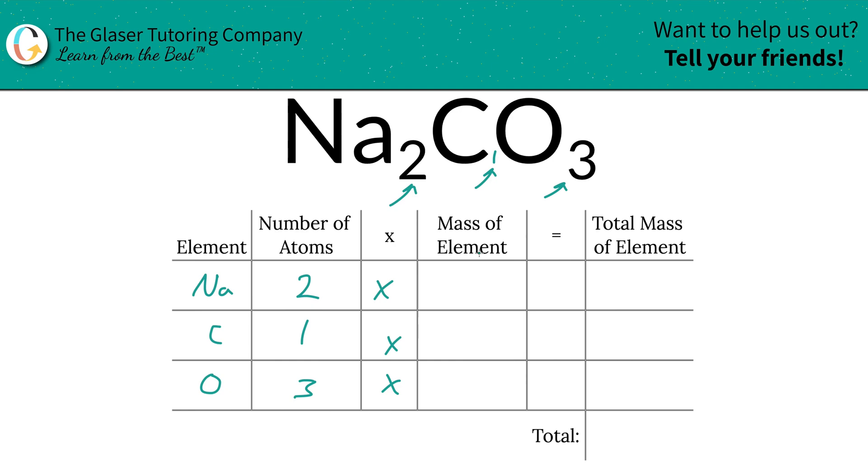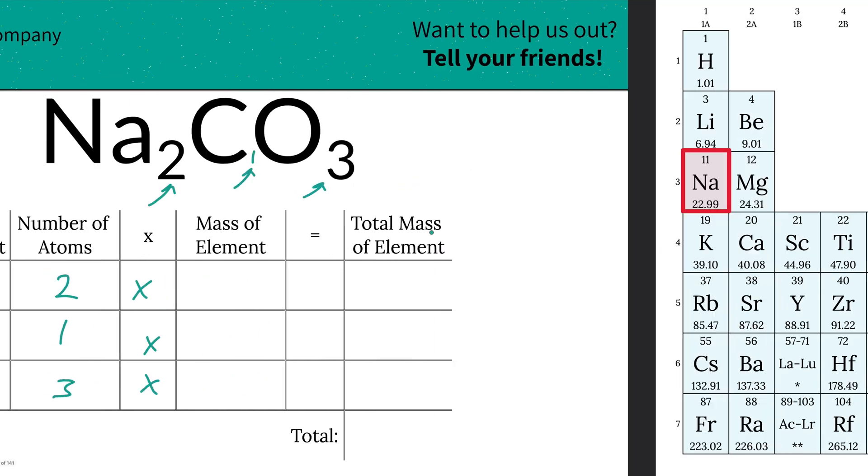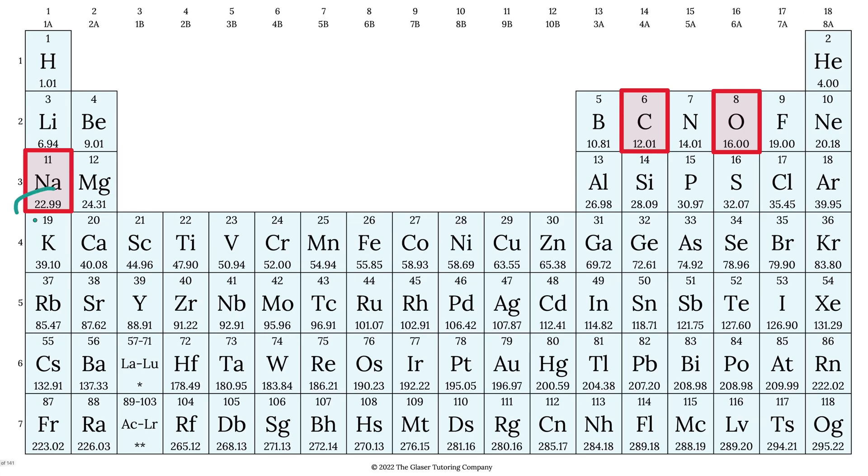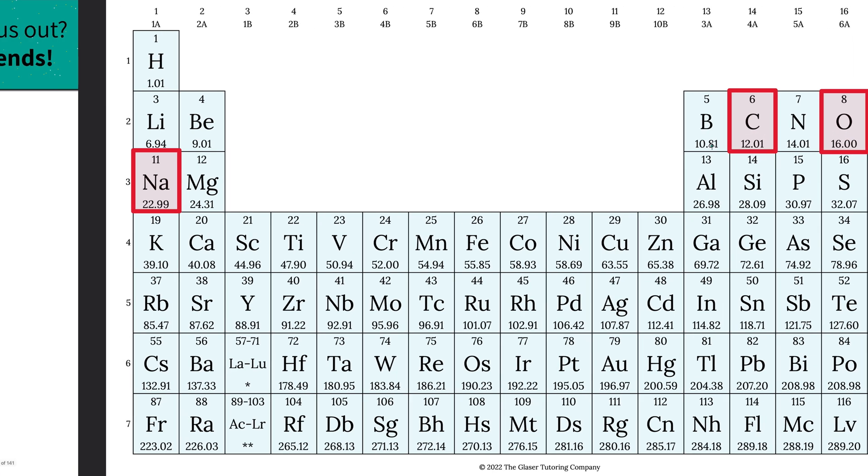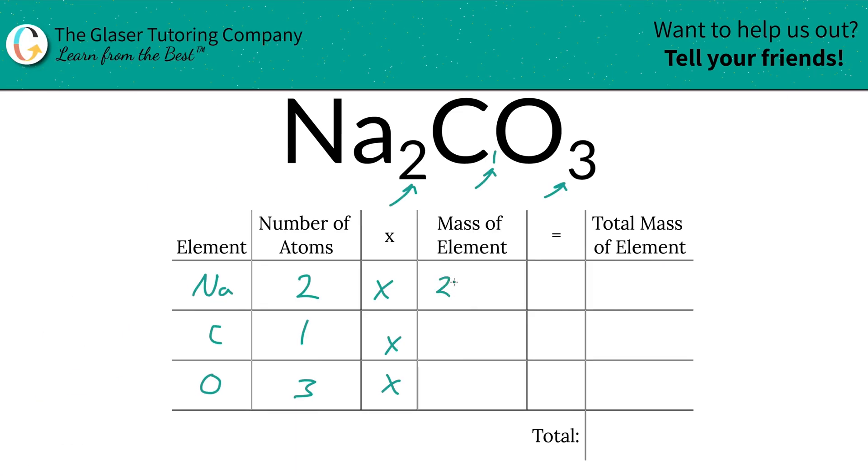Then we're simply going to multiply those number of atoms by the mass of each particular element, and those masses are found on the periodic table. Sodium's mass is 22.99, carbon is 12.01, and oxygen is 16.00.